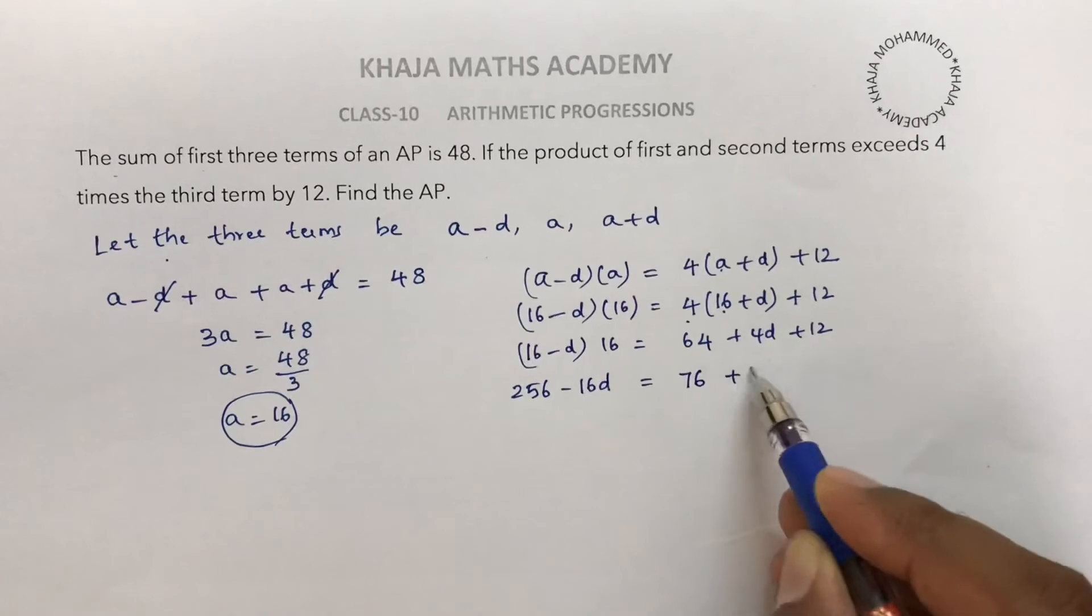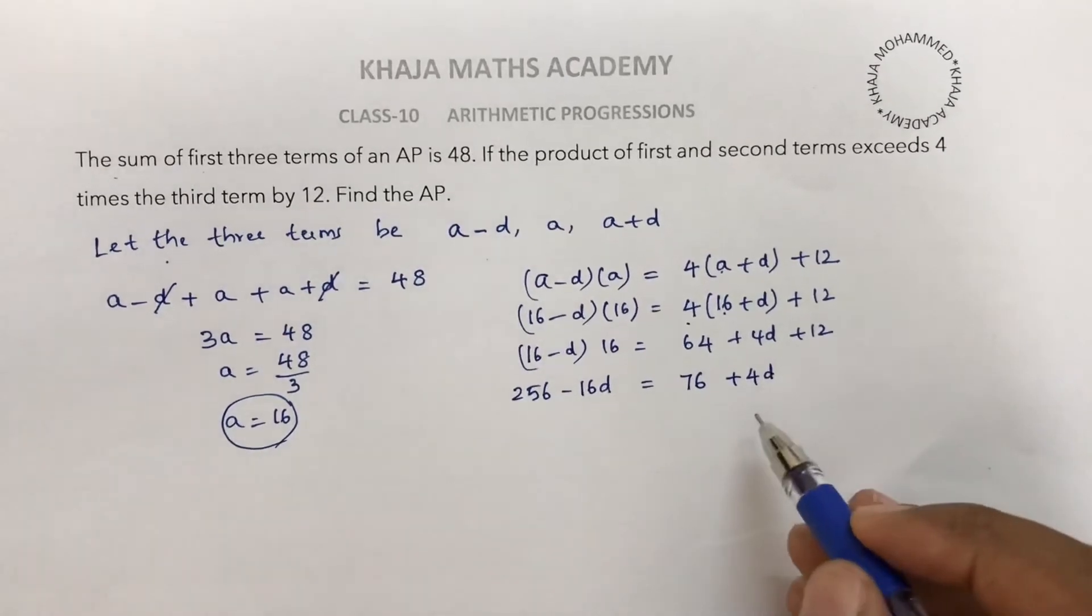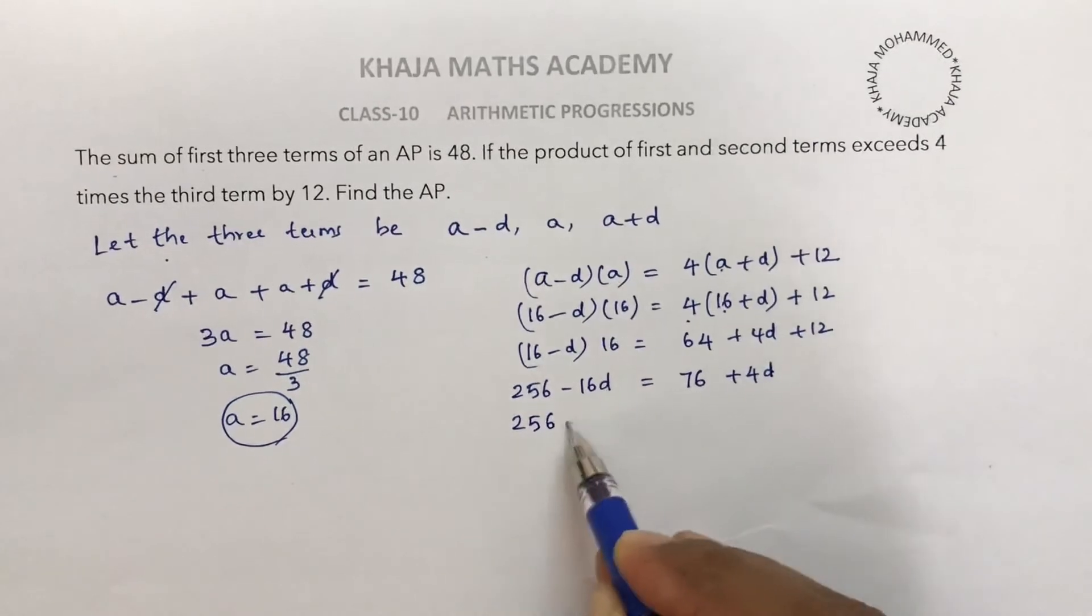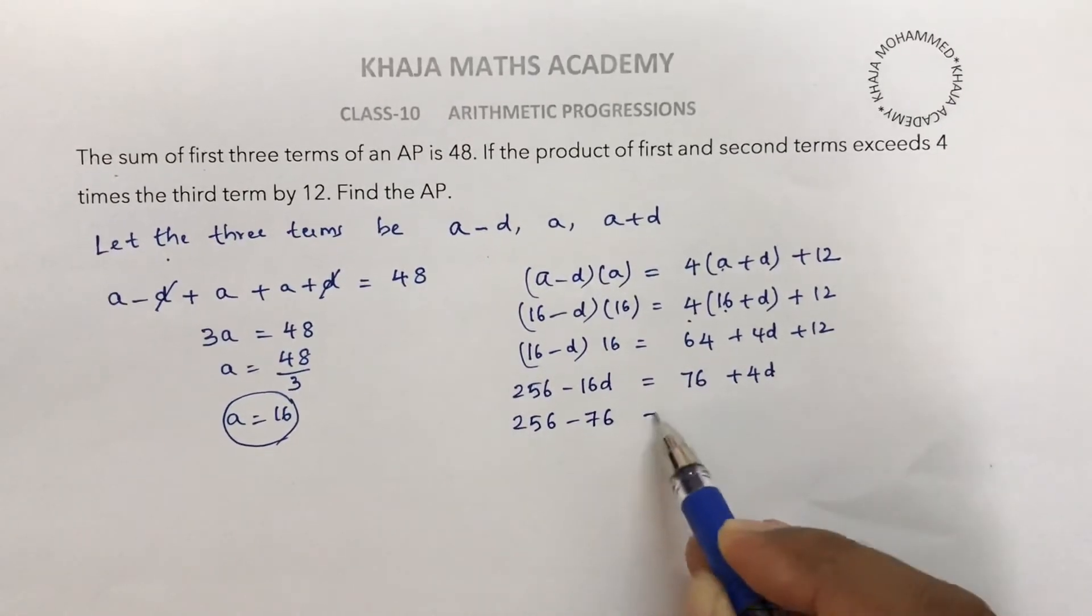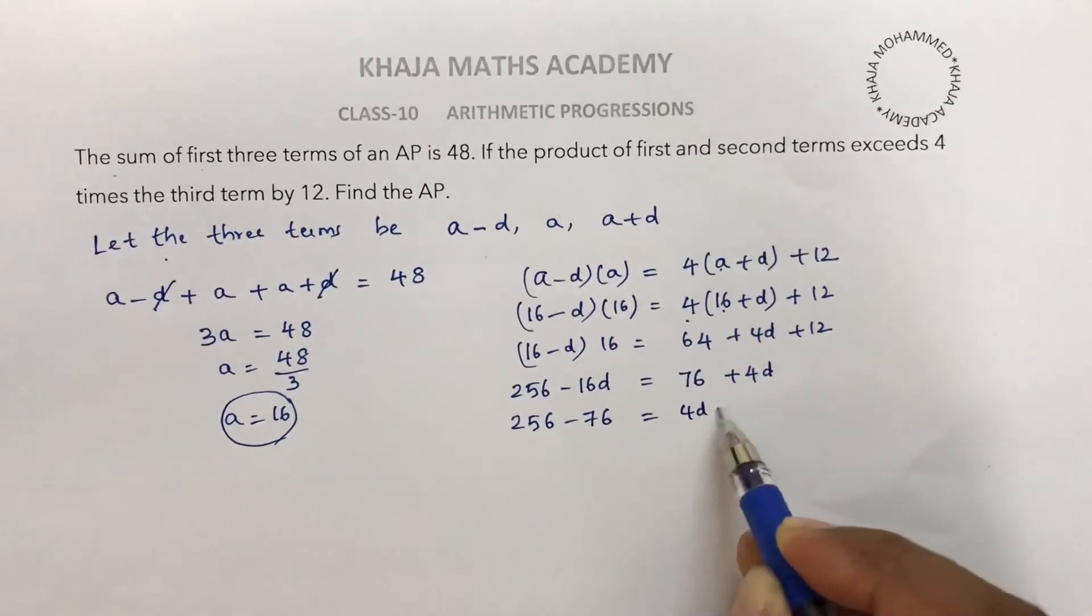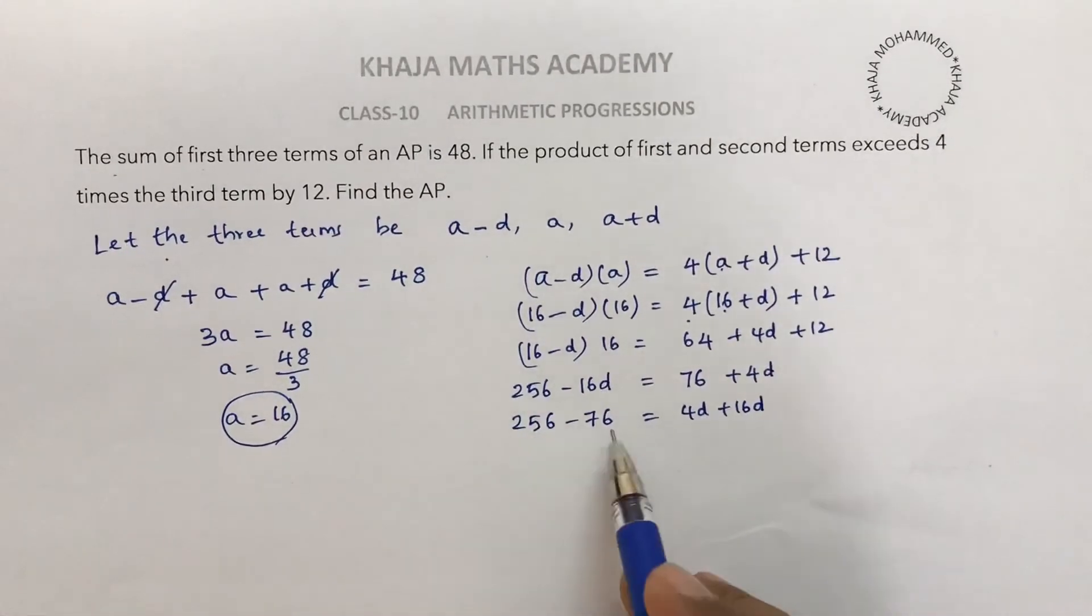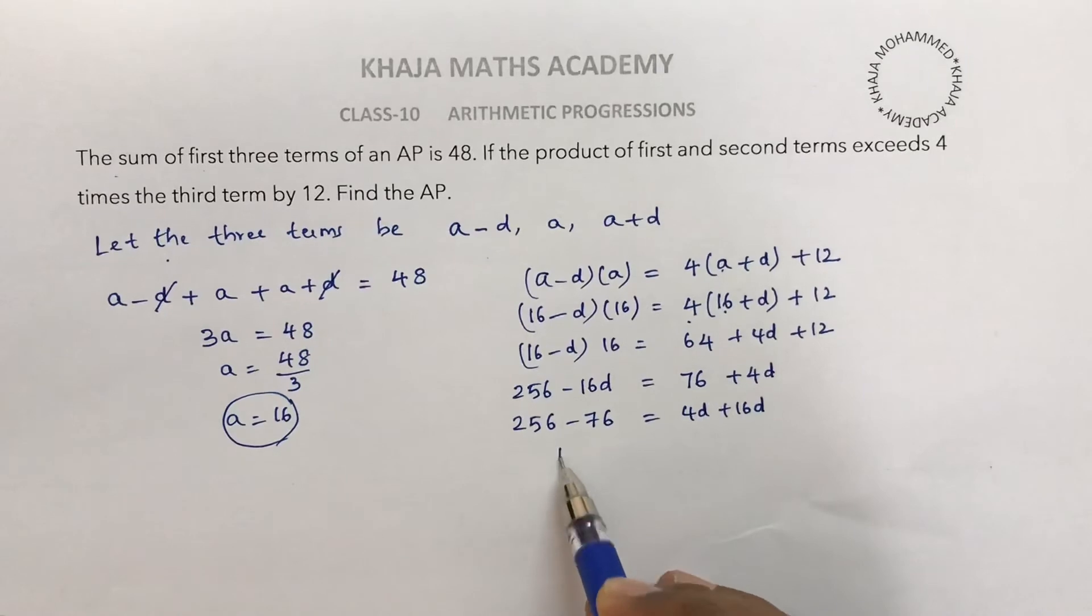Now 256 minus 76 equals 4d plus 16d. So 256 minus 76 equals 180 equals 20d.